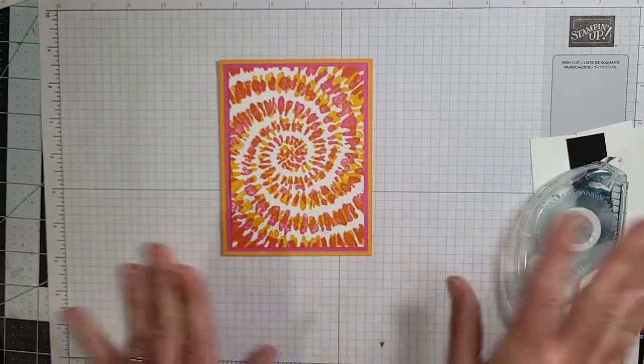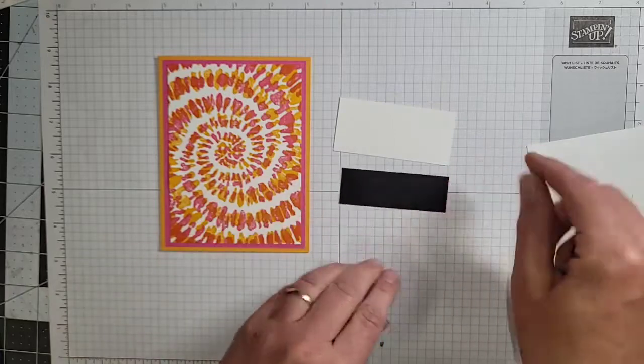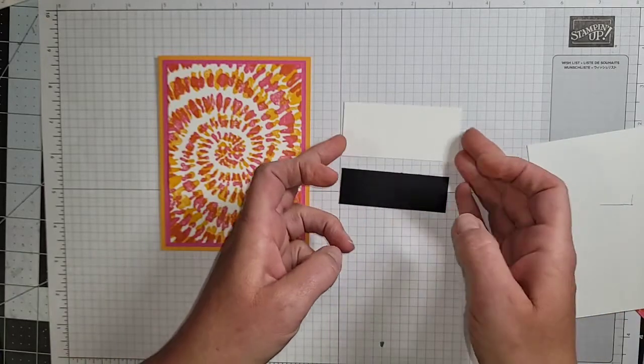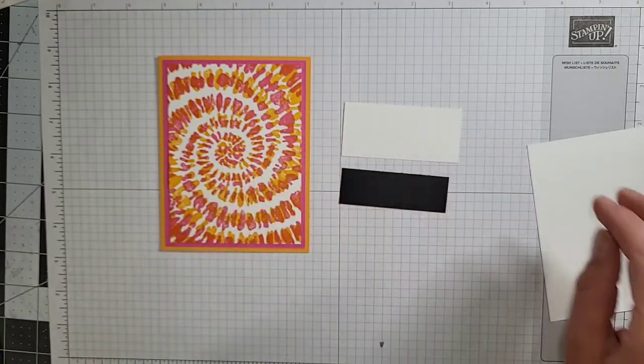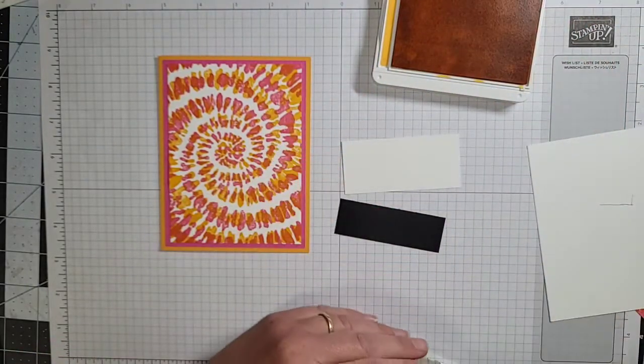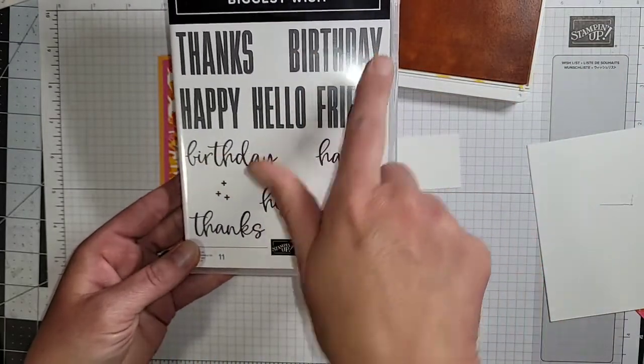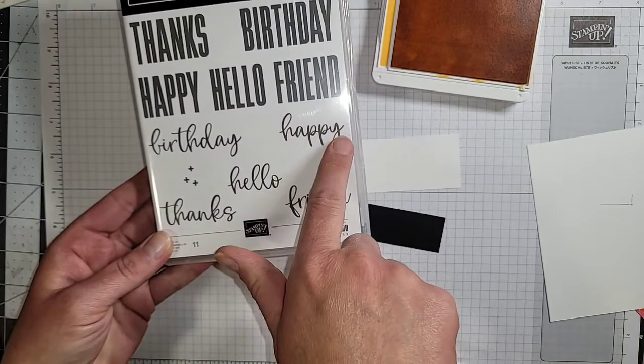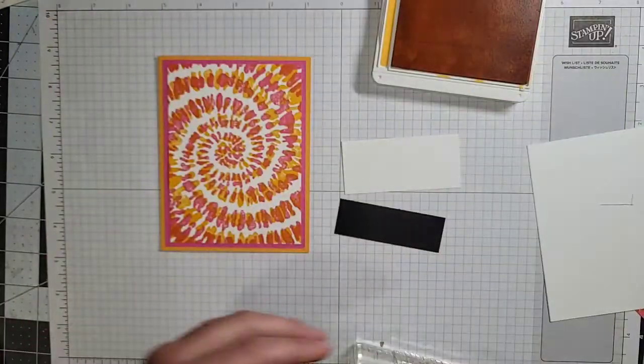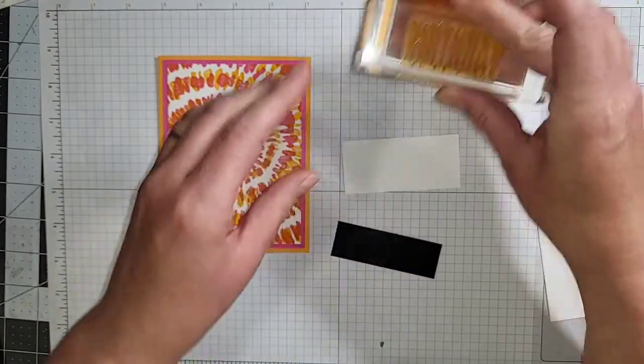There we go, I just love this stamp so much, it's so fun. Okay now we've got these two little pieces here. So we've got a strip of Basic Black and another piece of Basic White. And I'm going to use my Mango Melody again, and using the Biggest Wish stamp set I'm going to stamp 'birthday' and I'm also going to be using the 'happy'.